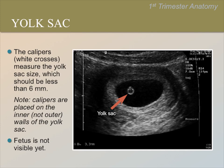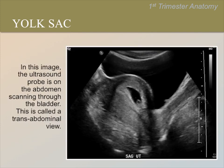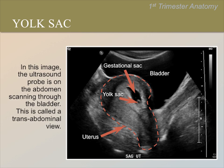In this image, the ultrasound probe is on the abdomen, scanning through the bladder to create a sagittal image. This is called a transabdominal view. Can you see the bladder, uterus, gestational sac, and yolk sac? Please pause the video now to discuss within the group. These structures have been outlined and labeled to make them more obvious. Both the gestational sac and bladder contain fluid, so they appear black.